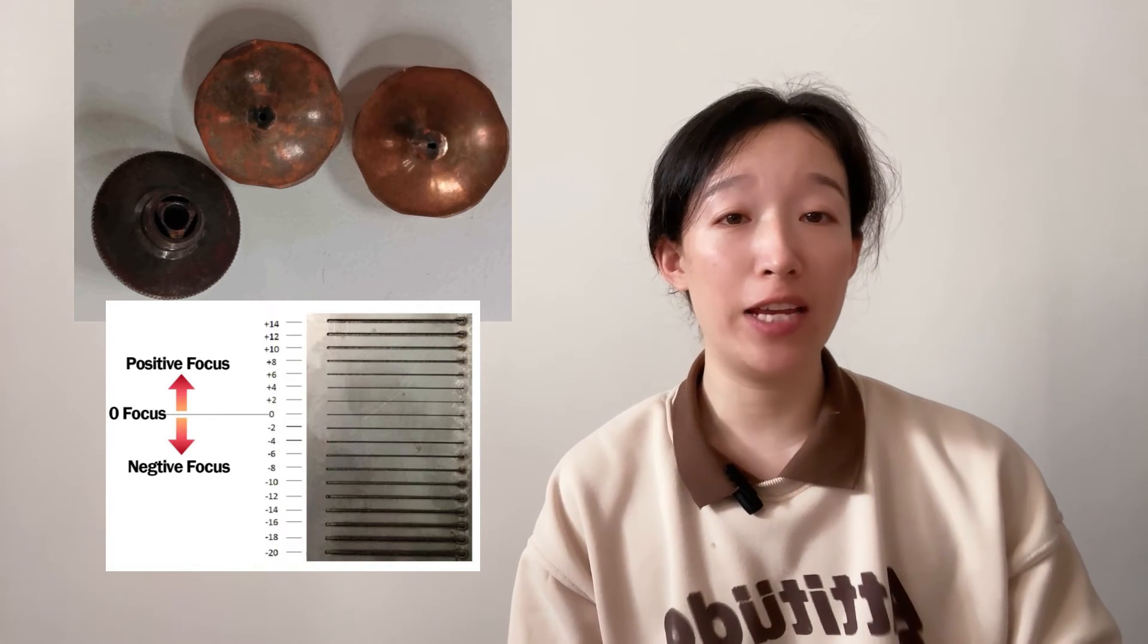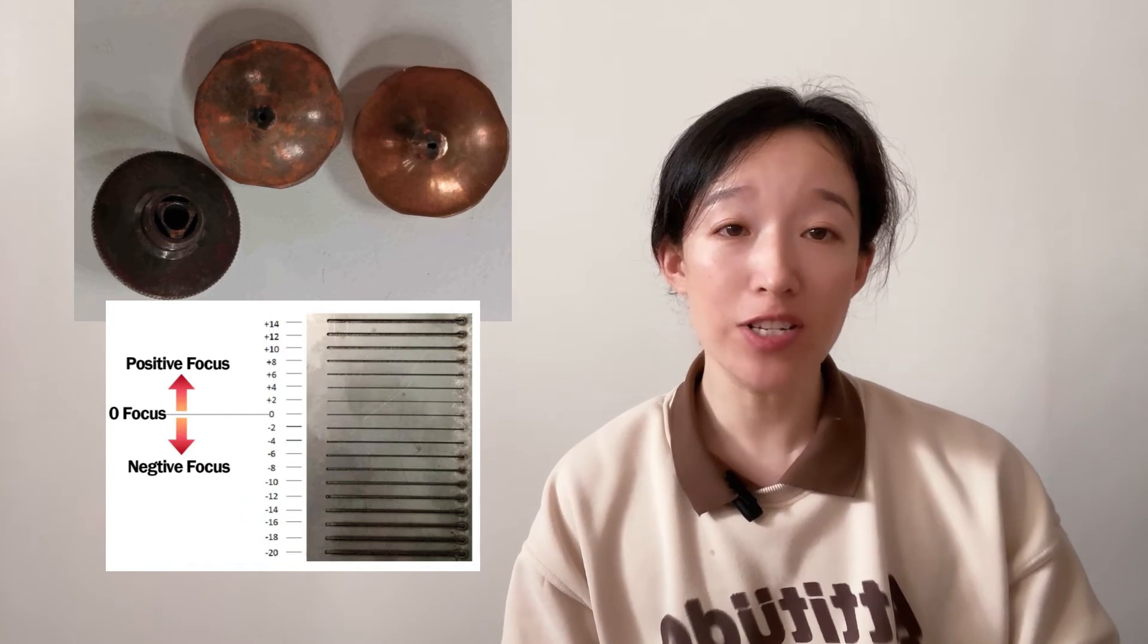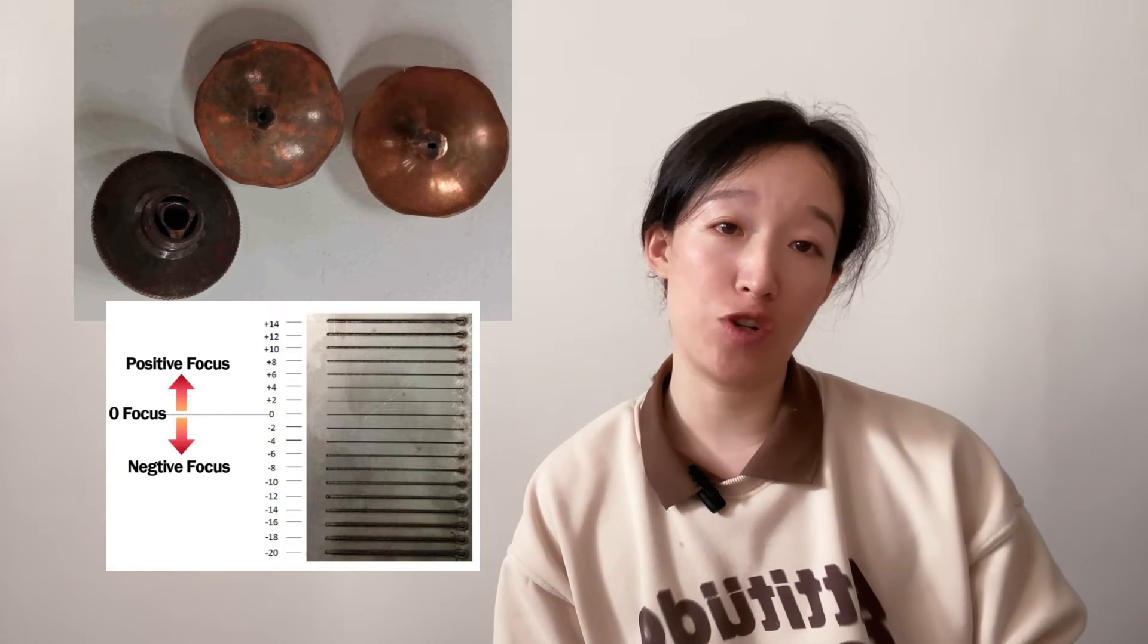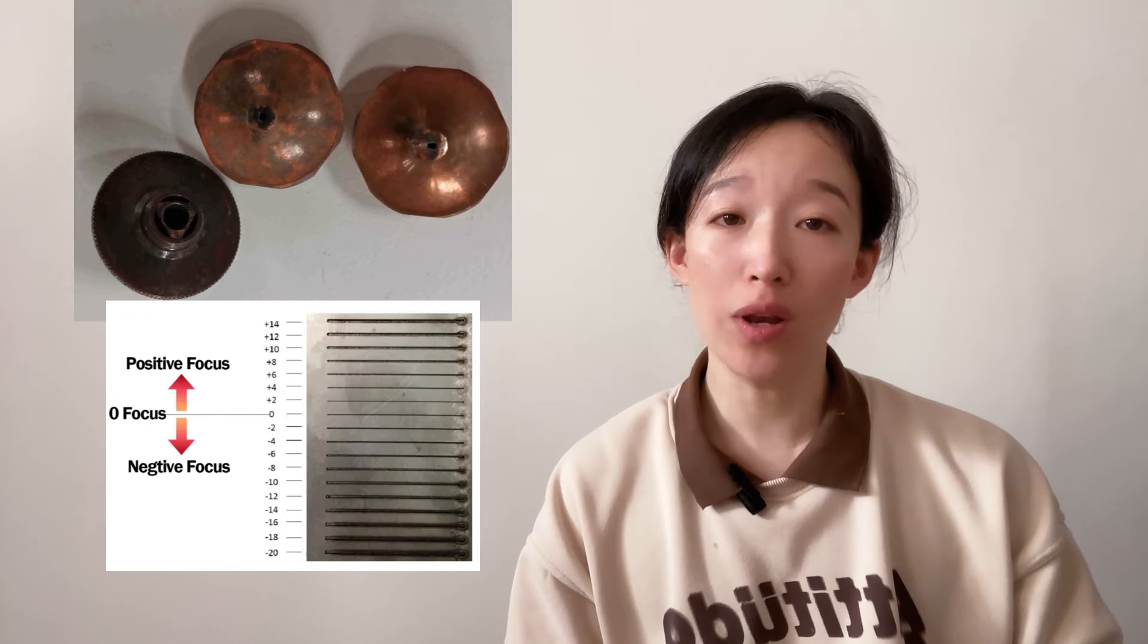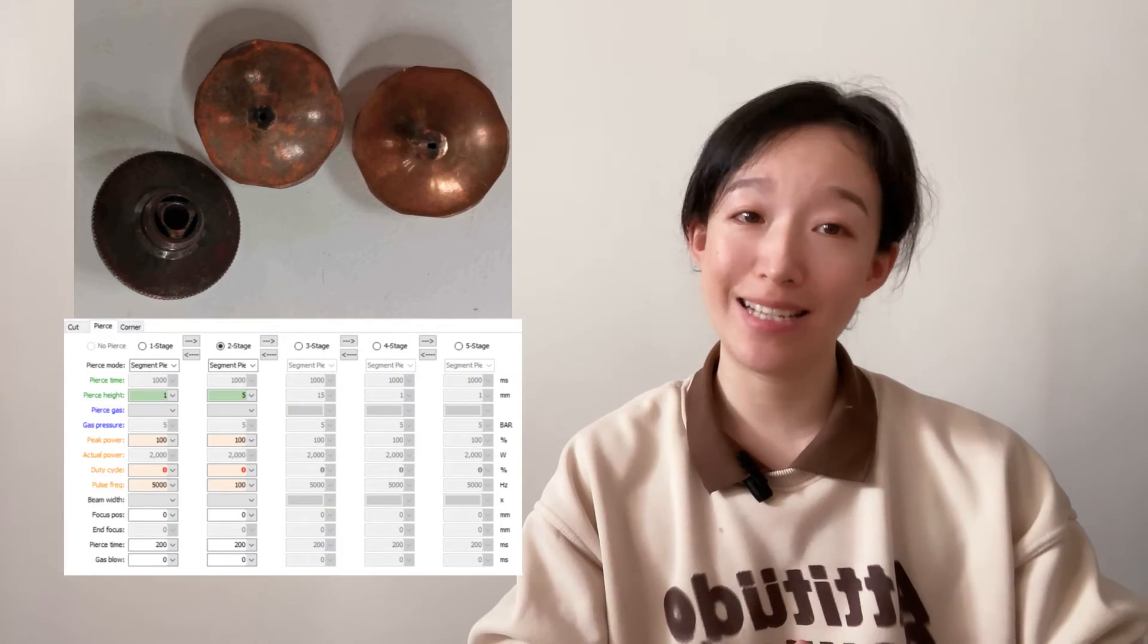The nozzle is burnt or hot. First, check whether the light indicator is normal, whether there is lens burnt. Second, detect whether the focus has deviated from the normal range, or the focus doesn't match the currently used nozzle aperture, causing the laser spot to be too large when it reaches the nozzle part. Third, the nozzle is hot when perforating. There is a high probability that the perforation parameter settings are inappropriate and need to be adjusted.